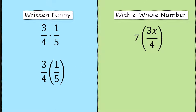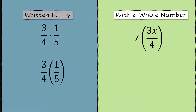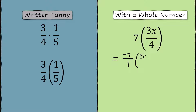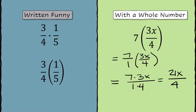Sometimes you see multiplication written with parentheses, and I just wanted to point that out so you'll recognize it when you see it. When you're asked to multiply with a whole number, you have to put that whole number over 1 so that it appears as a fraction. Any number over 1 equals itself. So now we multiply 7 times 3x, that's 21x, and 1 times 4 is 4.